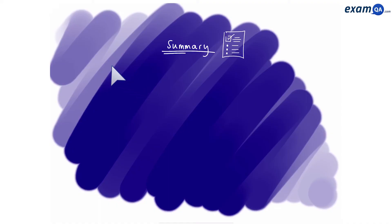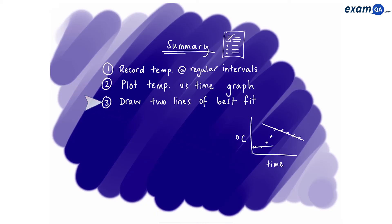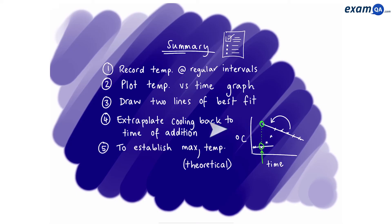Okay to summarize what we just did. Number one we're going to record the temperature at regular intervals. Number two we're going to plot a temperature versus time graph. Number three then we're going to draw two lines of best fit. Number four we're going to extrapolate the cooling back to the time of addition of the second reactant. Then from the moment that we added a second reactant we're going to draw a line up to our extrapolated line. And from this we're going to establish the maximum theoretical temperature. So if they ever ask you in a question how would you obtain a proper or true temperature change this is what you'd mention.